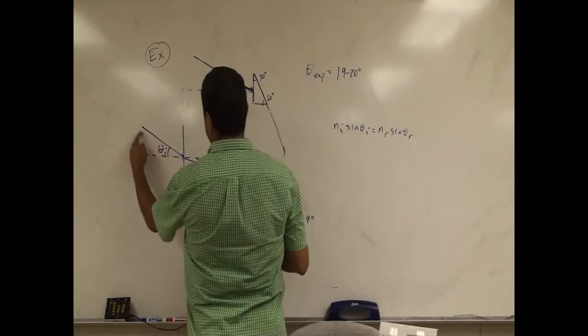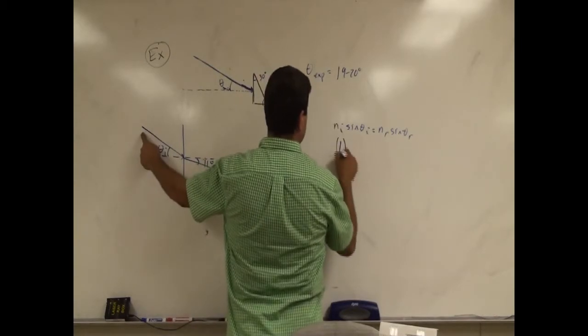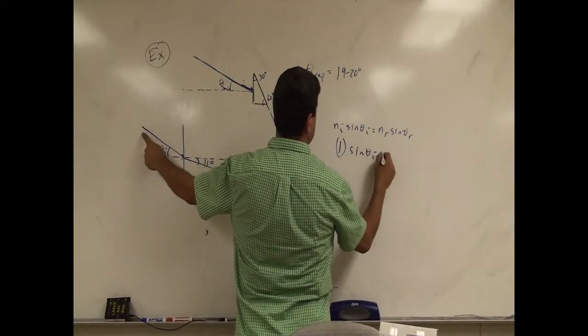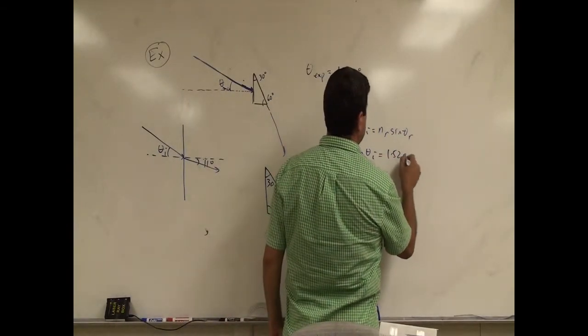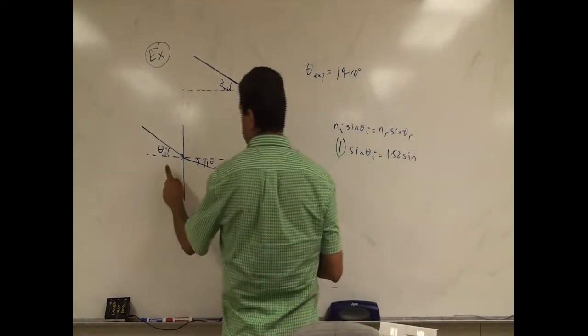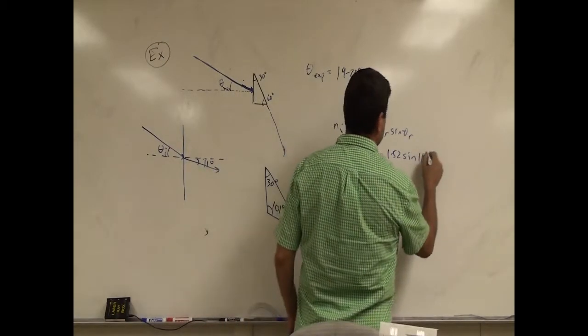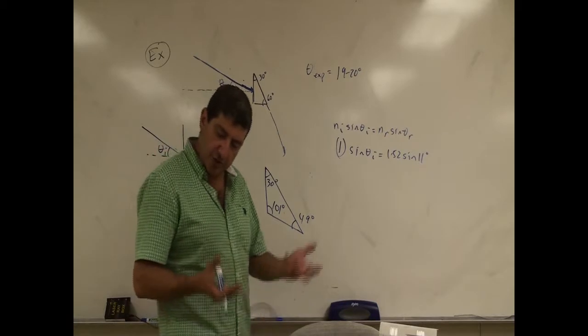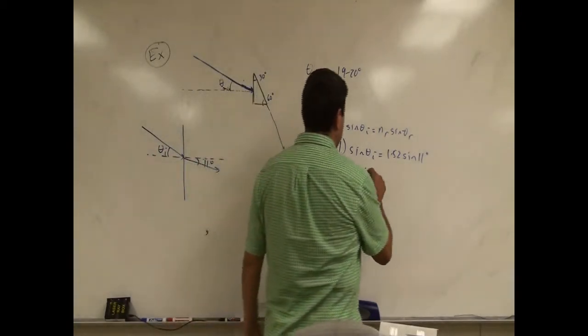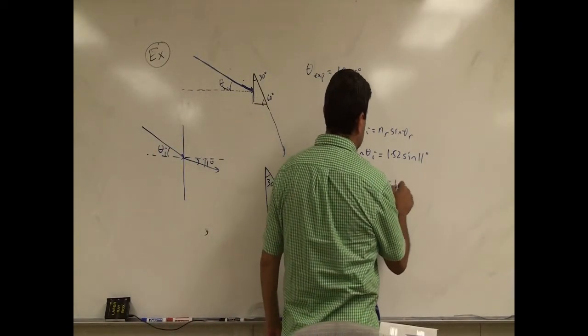N incident sine of theta incident equals N refracted sine of theta refracted. The incident, the original incident medium is air, sine of theta incident, and then the theta refracted is going to be the glass, 1.52 sine of, and then theta refracted is going to be the 11 degrees. So very neat problem. 16.8 degrees, so about 17 degrees. So theta incident theoretical is 17 degrees.